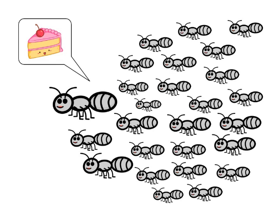Ants are capable of finding the shortest path between the food source and the nest without the use of visual information. This intriguing ability of the almost-blind creatures has been extensively studied by ethologists. They discovered that in order to exchange information about which paths should be followed, ants communicate with one another by means of a chemical substance called pheromone. As ants move, a certain amount of pheromone is dropped on the ground, marking the path through the trail of this substance.